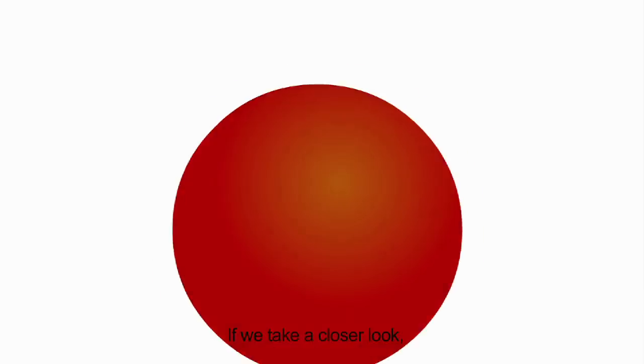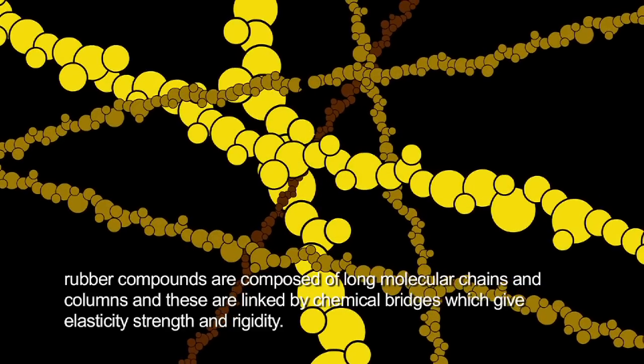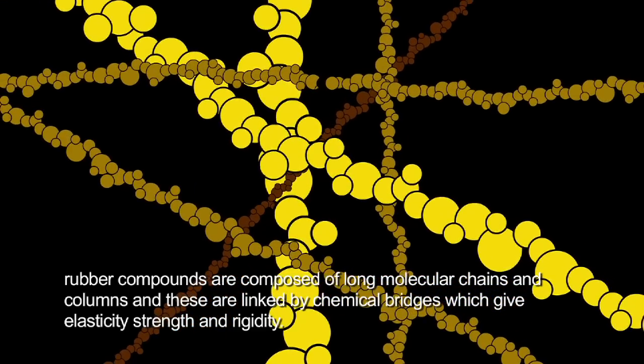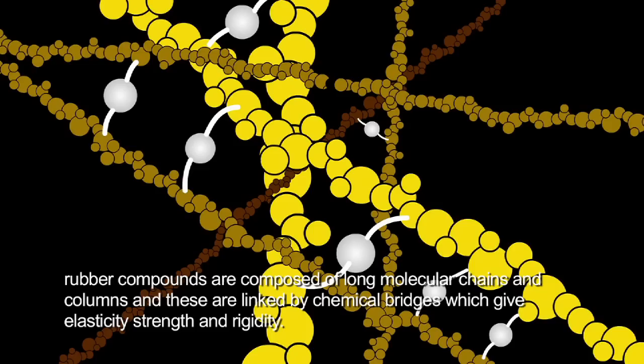If we take a closer look, rubber compounds are composed of long molecular chains and columns, and these are linked by chemical bridges, which give elasticity, strength, and rigidity.